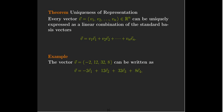It's a very simple idea. Let's look at an example. So, in R4, I have a vector with components negative 2, 12, 32, and 8.